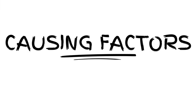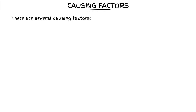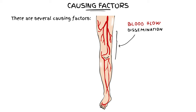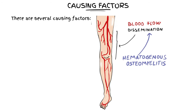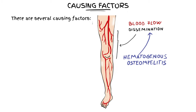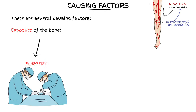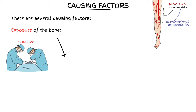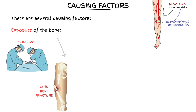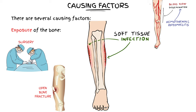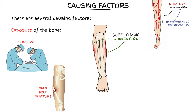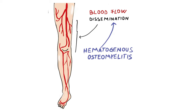There are several events that can cause this infection. It can be a dissemination through the blood flow — this is called hematogenous osteomyelitis. In other cases, it is due to an exposure of the bone tissue during surgery, or even during an open bone fracture. Other times it can be an infection of the soft tissues that surround the skeletal tissue. In this video we will talk about the hematogenous osteomyelitis.